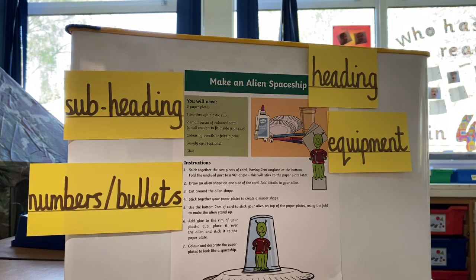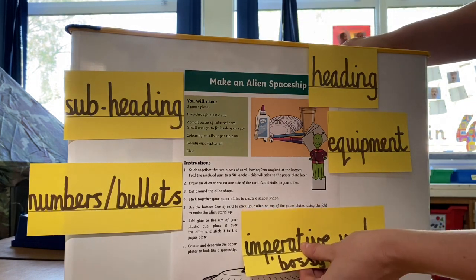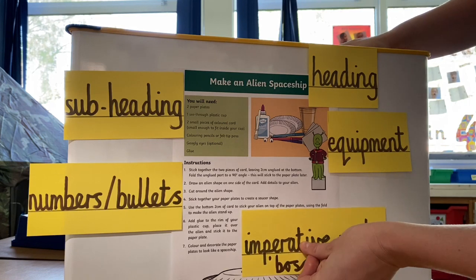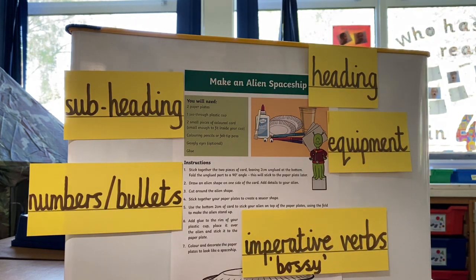Looking further at the set of instructions, we have another subheading and along with that, we have some numbers or bullet points. Numbers or bullet points allow the reader to follow the instructions step by step. You will also notice that each instruction begins on a new line. Our next feature is imperative verbs — sometimes we know them as bossy verbs.